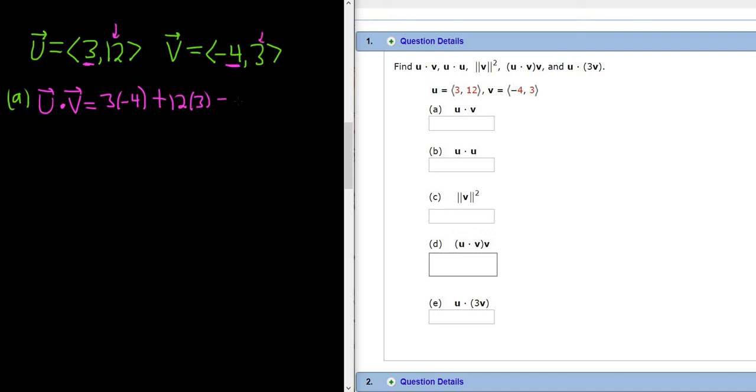This is negative 12 plus 36, which is equal to 24. So the answer to part a is 24. The dot product is a number. And remember, if the dot product of two vectors is 0, then the vectors are perpendicular.